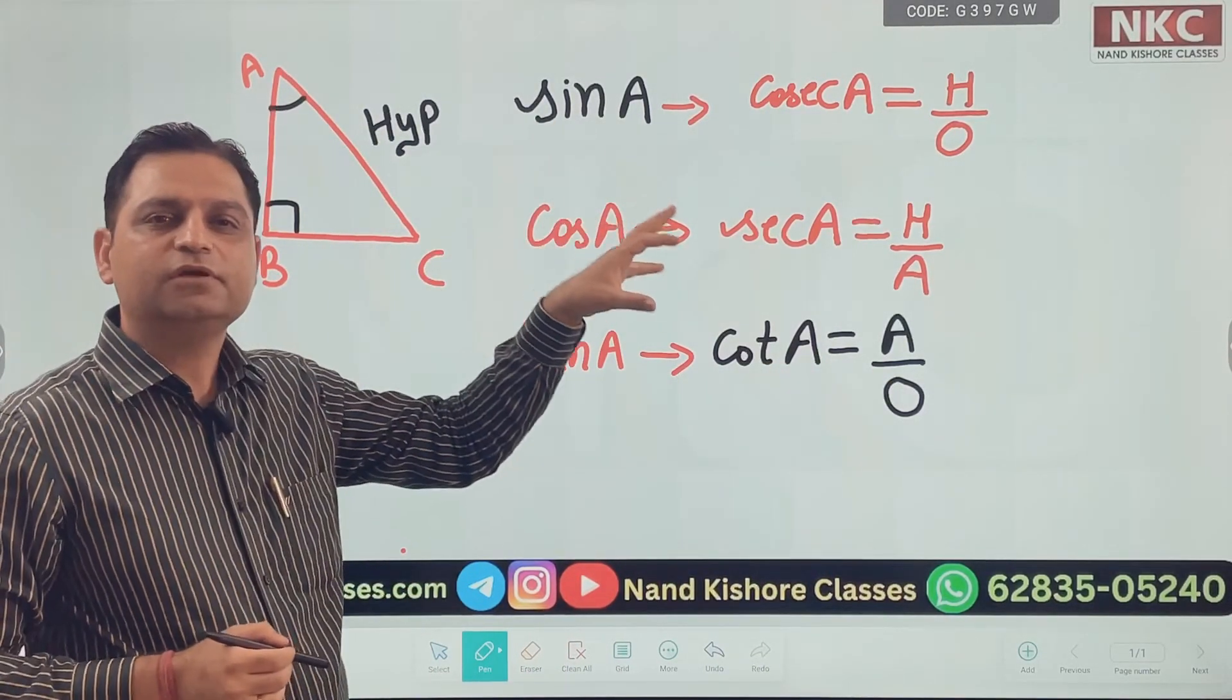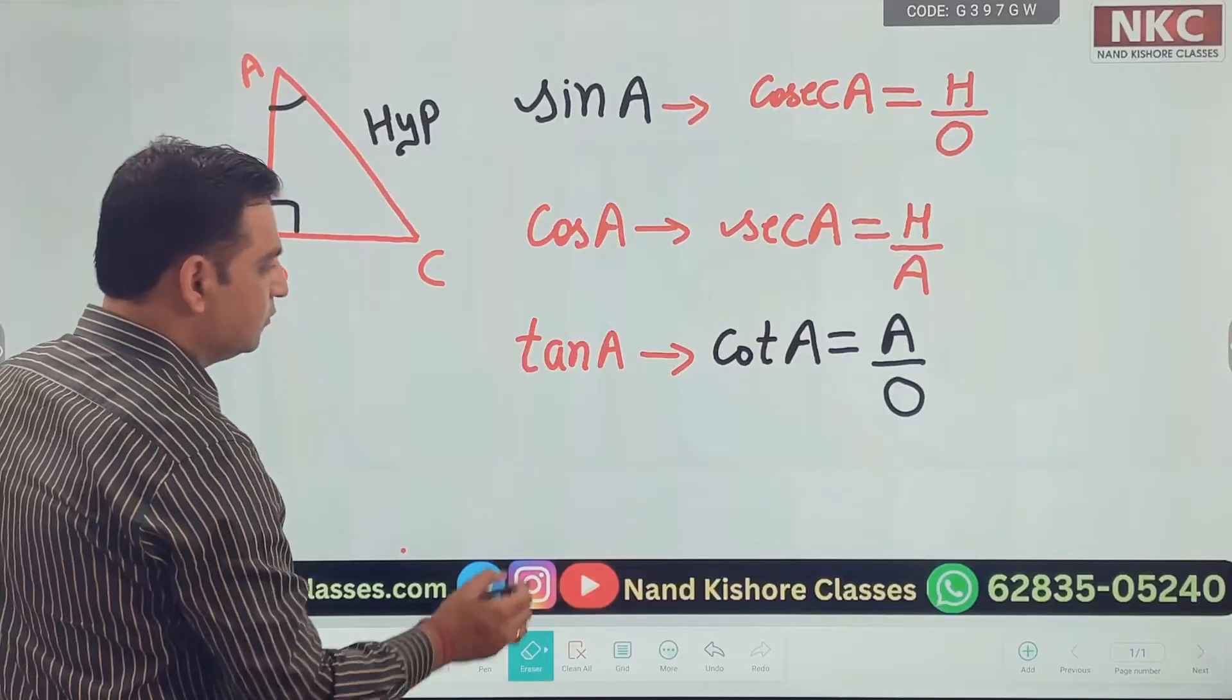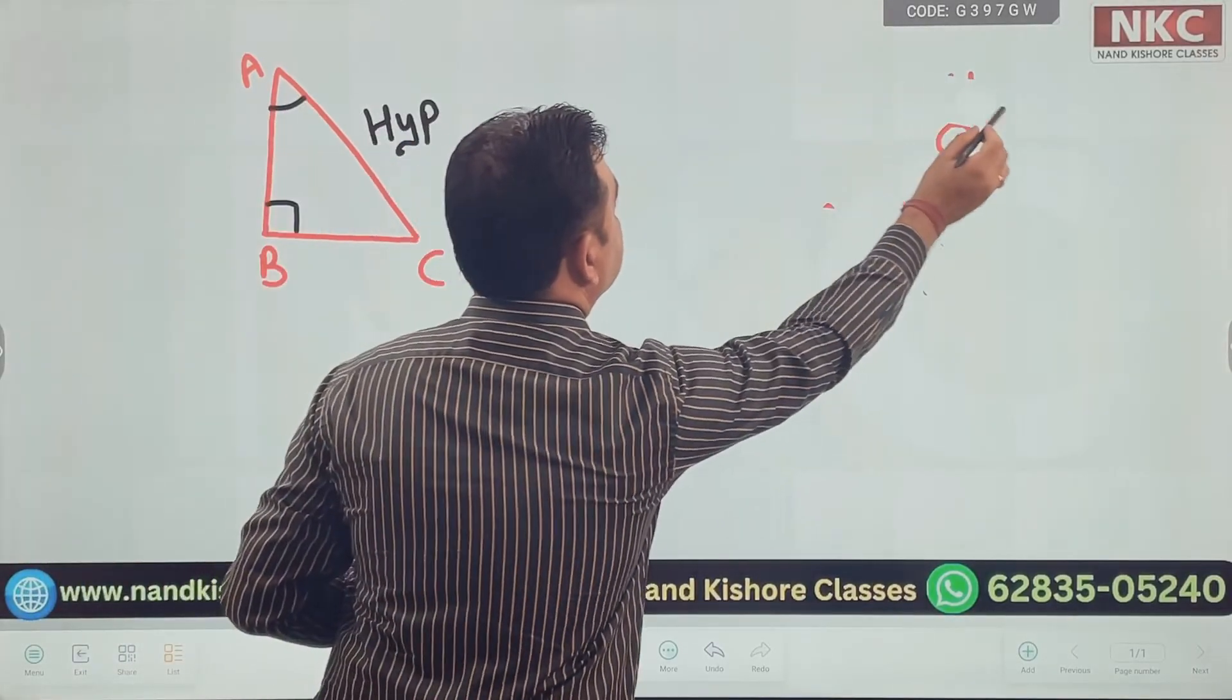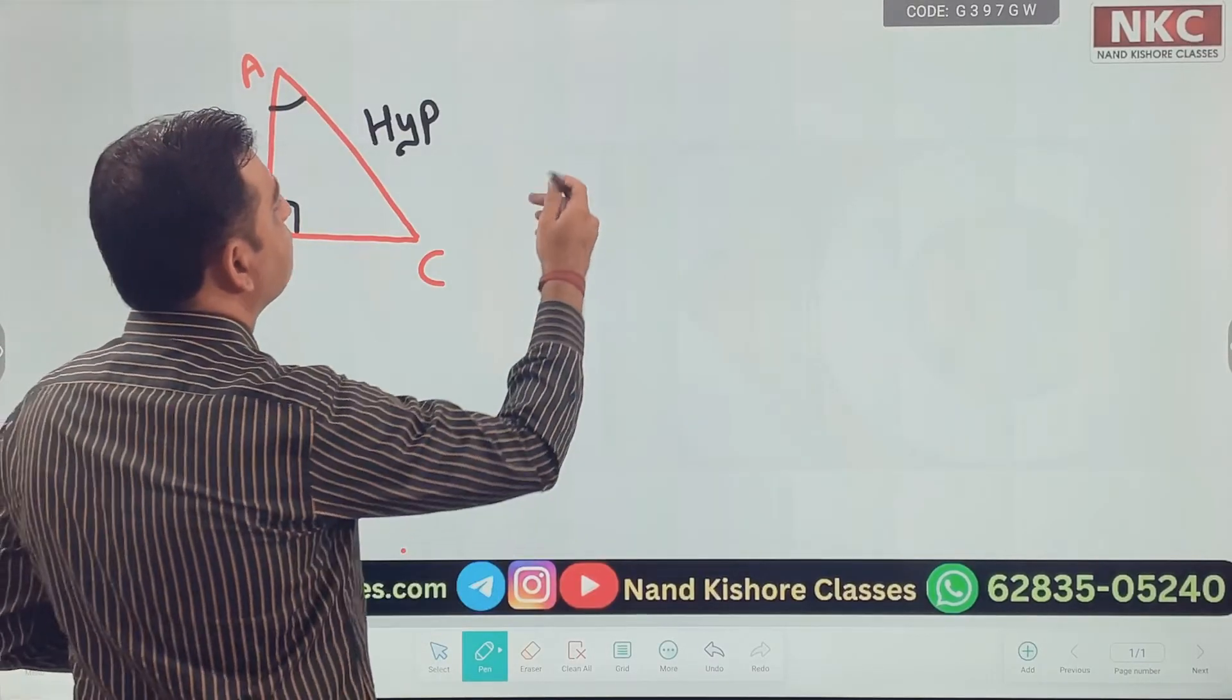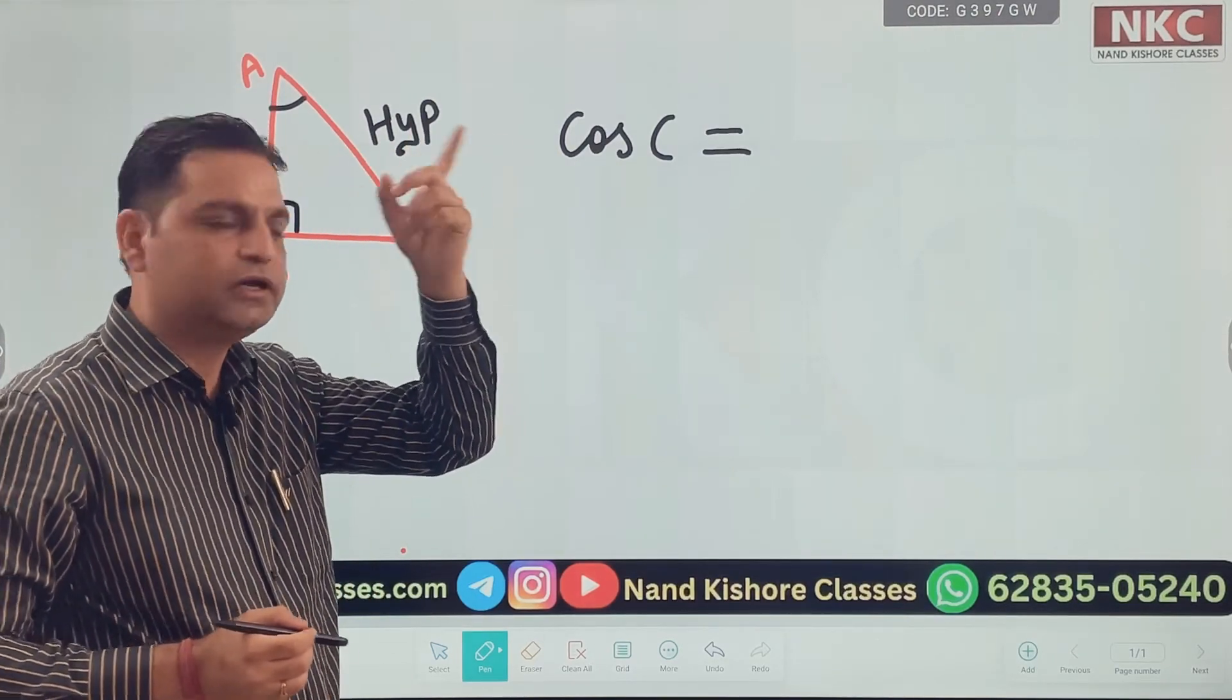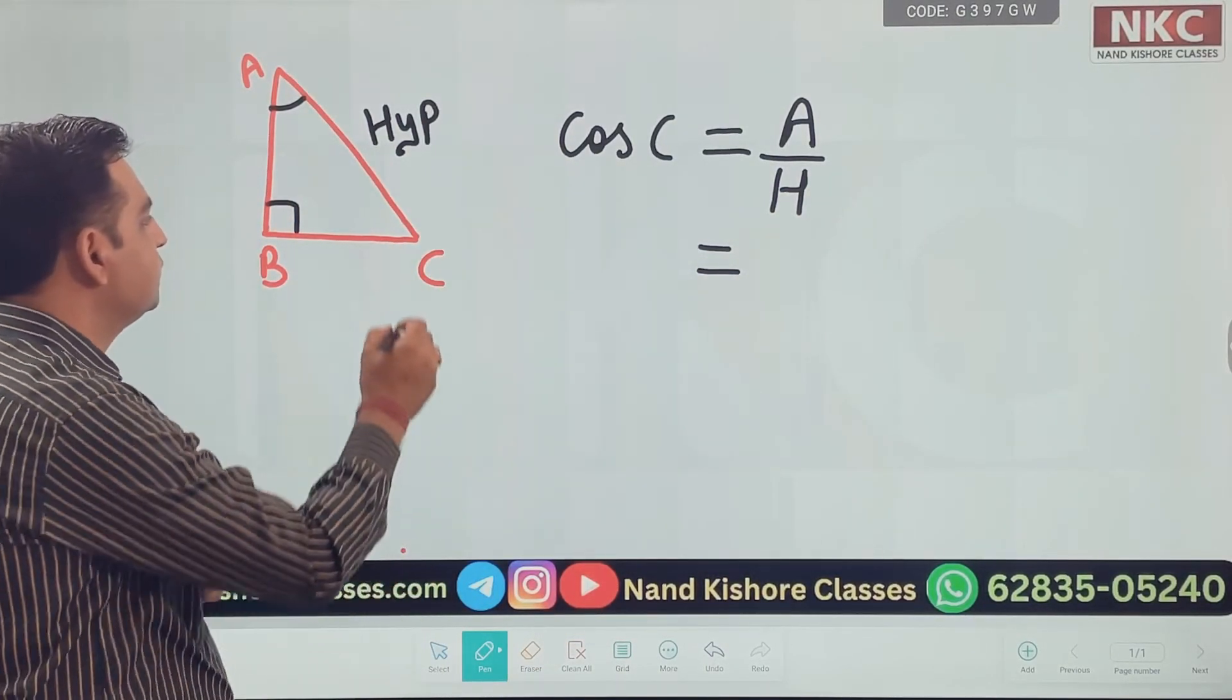Since, the way we have done everything for angle A, same thing can be done for angle C as well. Just giving last example, which you can just check it out right now. Now, if let's suppose, I am coming for cos C. Just a random thing I am taking. Let's suppose, you want to find the value of cos C. Now, you just need to remember, okay, cos, it was adjacent over hypotenuse. Right? Now, for angle C, which is here.